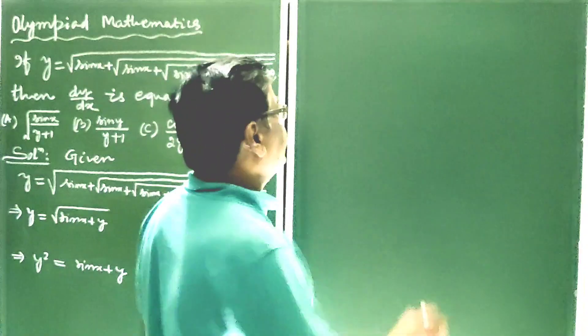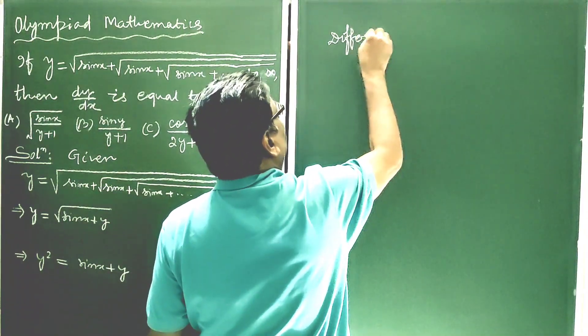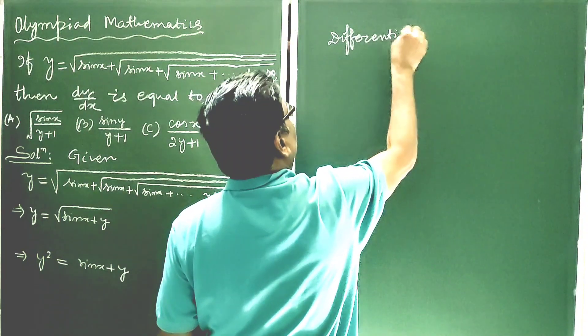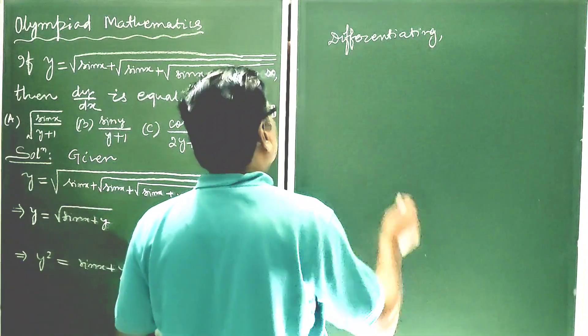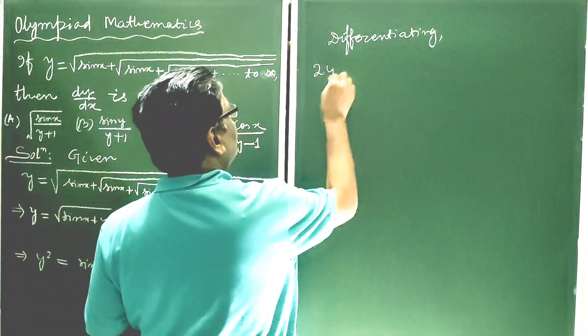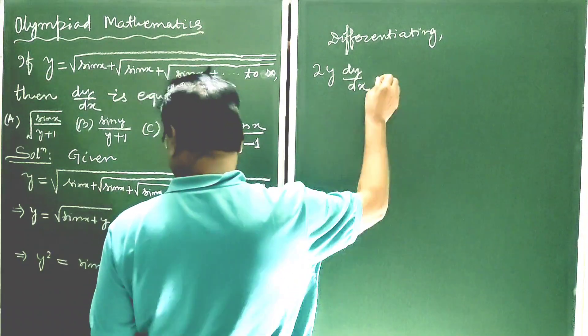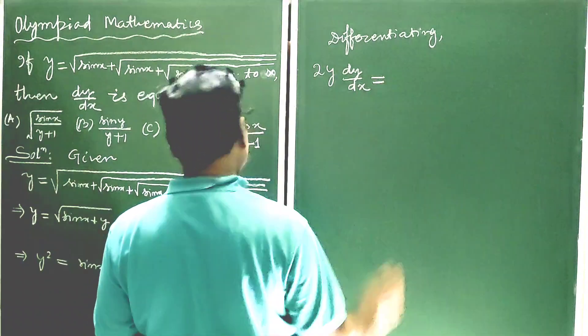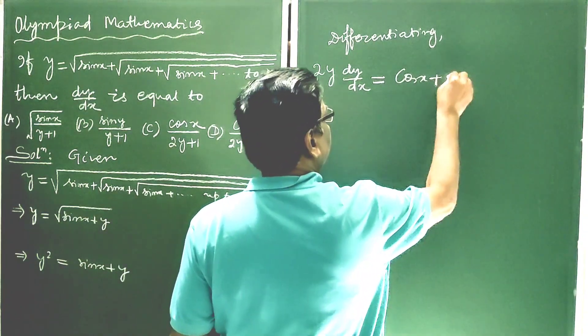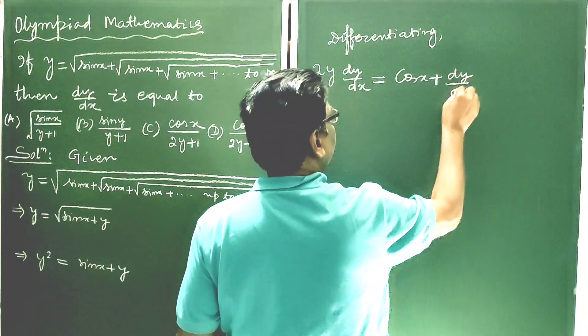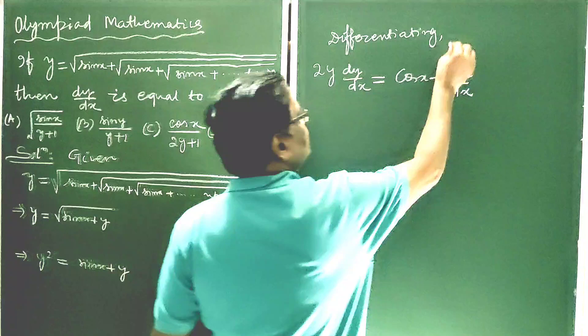Now differentiating, we get 2y dy by dx is equal to the derivative of sin x, which is cos x, and the derivative of y is dy by dx. We are differentiating with respect to x.